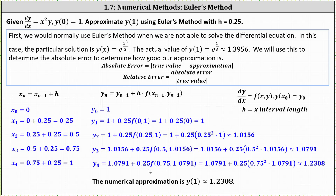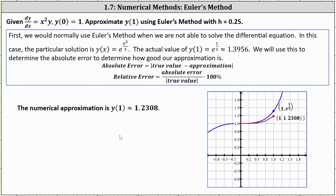Let's compare this to the actual function value. Looking at the graph on the right, the blue graph is the particular solution where y of 1 equals e to the power of 1/3, or approximately 1.3956. The red graph is formed using Euler's method, and the rightmost point is 1 comma 1.2308, which is the point x sub 4 comma y sub 4.